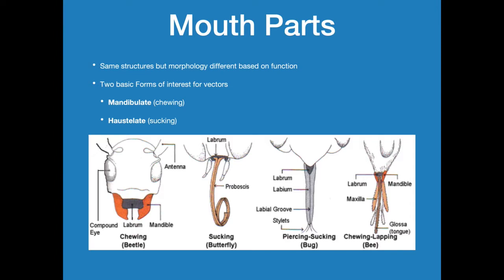That brings us to mouth parts, which are really important. All mouth parts have the same structures, but their morphology or shapes are very different because their functions are very different. We have two basic forms for vectors: mandibulates and haustellates. Mandibulates are chewing insects, and haustellates are the sucking insects. On the left, the mandibulate is a chewing insect — the mandibles are really broad and strong with a lot of chitin, like a really big pair of pliers. The butterfly has a proboscis that is flexible. In some butterflies it's very long, so they feed on nectar in long tube-like flowers. Others have a shorter proboscis and feed on more open flowers like milkweed or daisy.